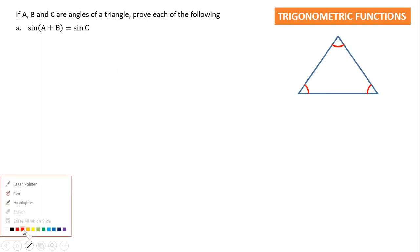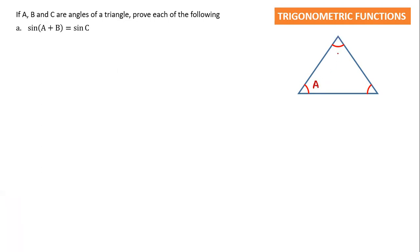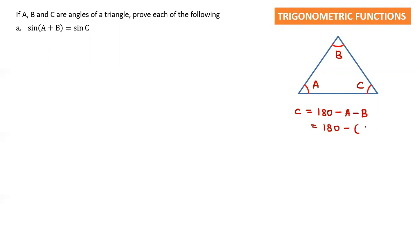I'm going to label the angles for you. I'll take this one as A, this one as B, and this one as C. Now, C is equal to 180 minus A minus B. I can factorize the negative to get C = 180 minus (A plus B) inside the bracket. Keep that in mind — now we go to the question.